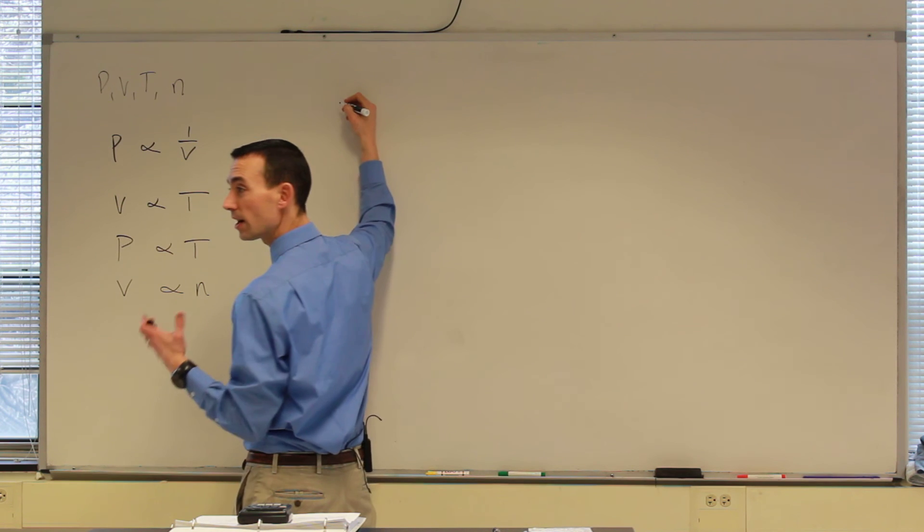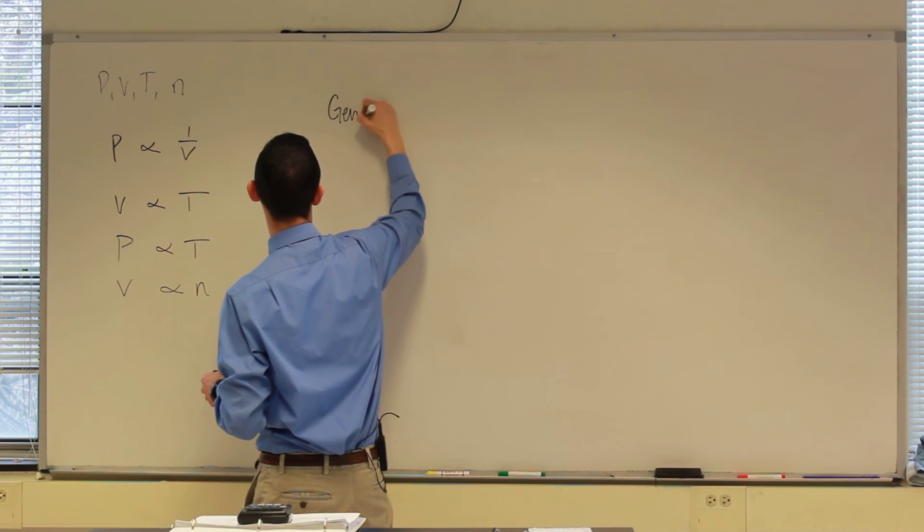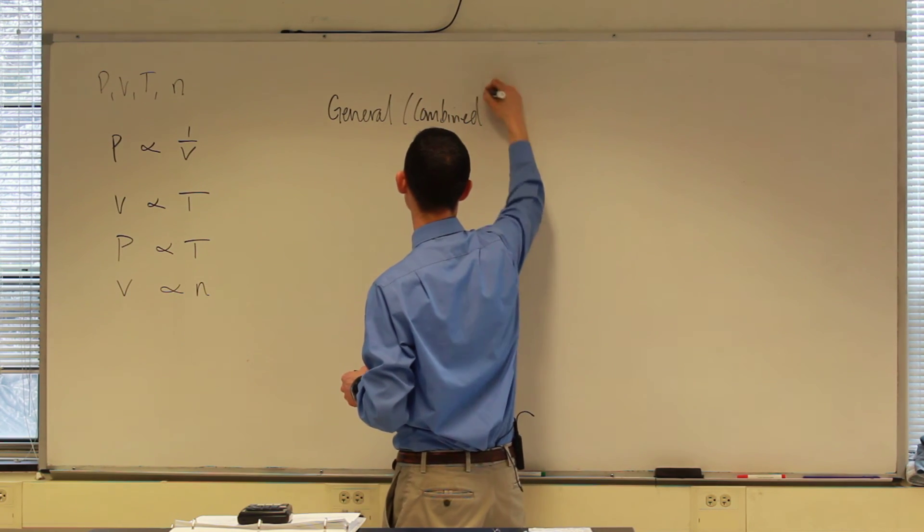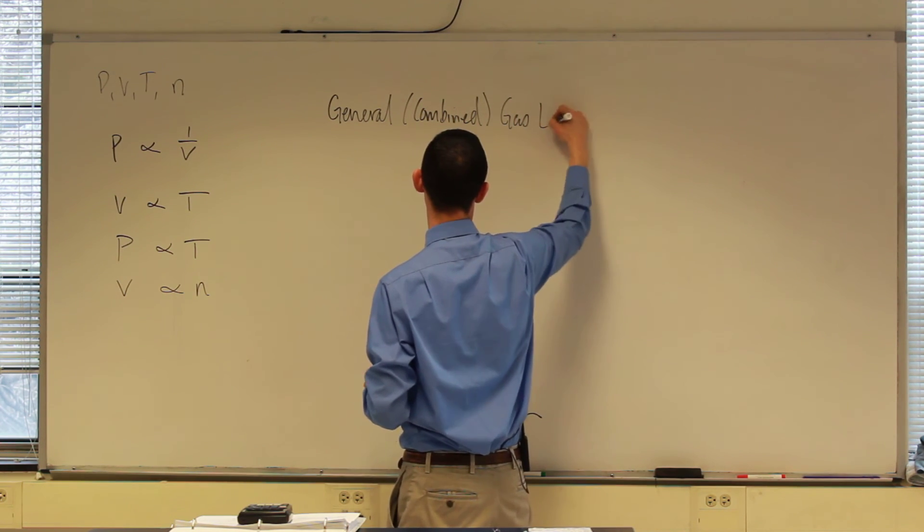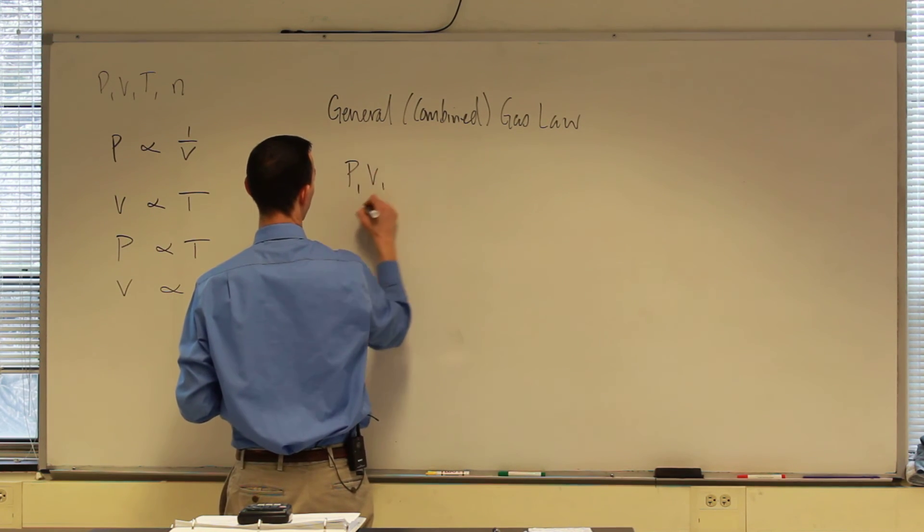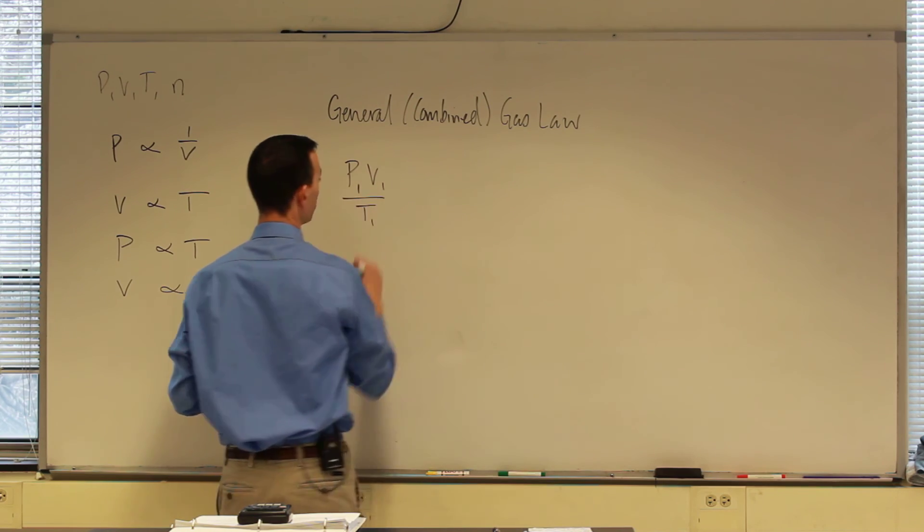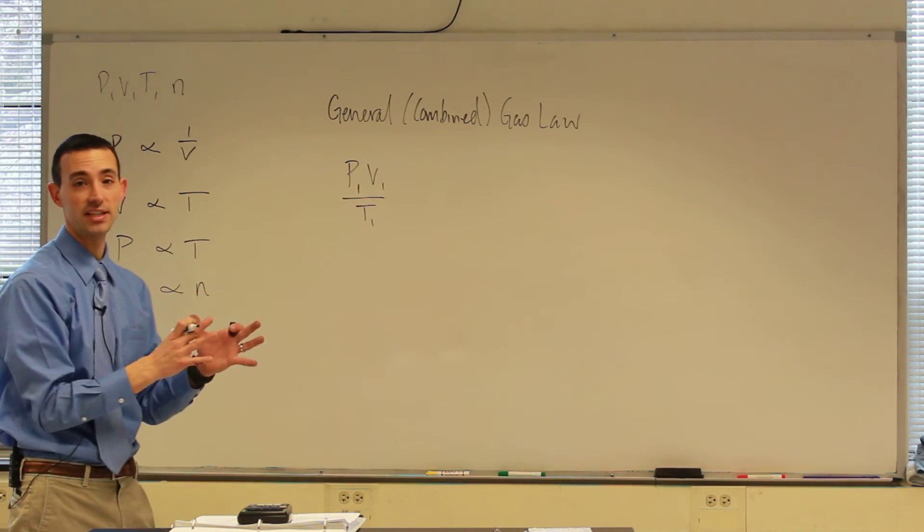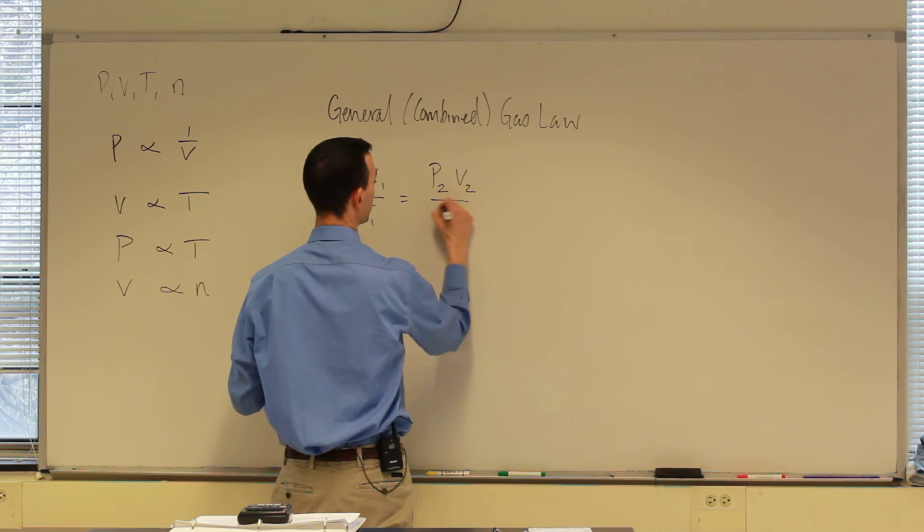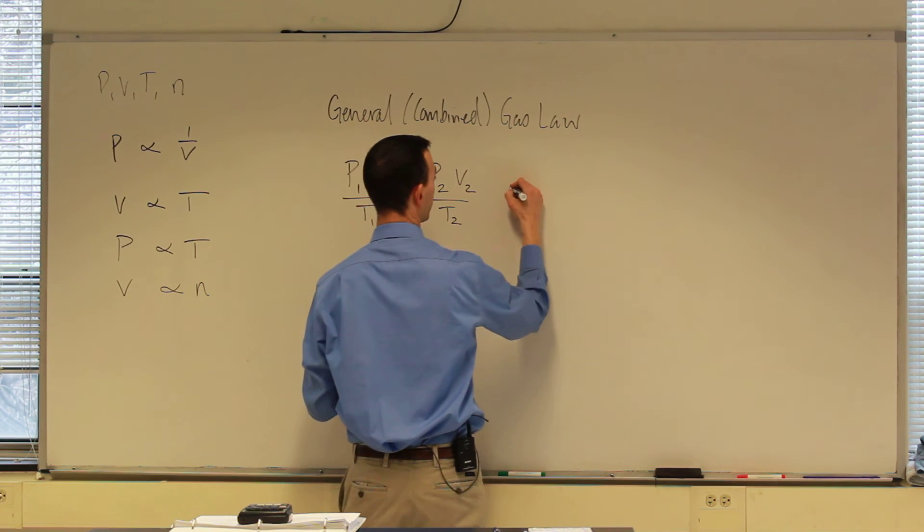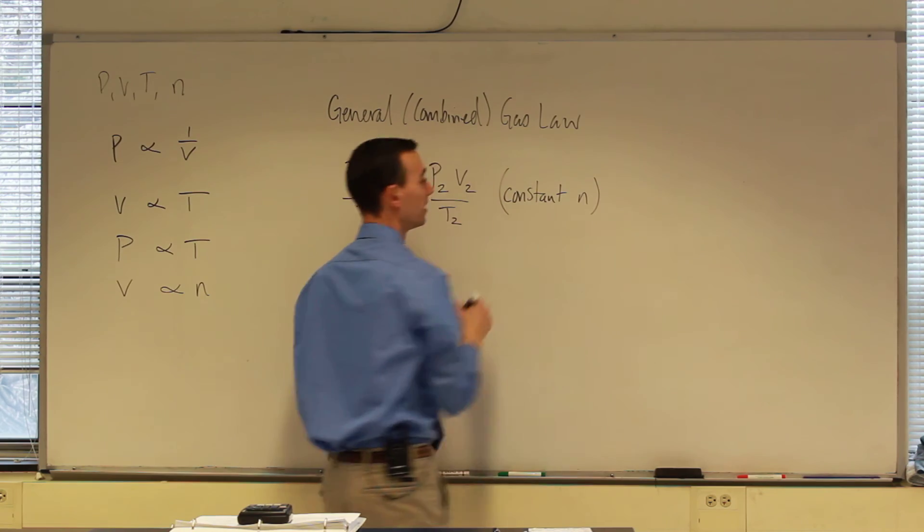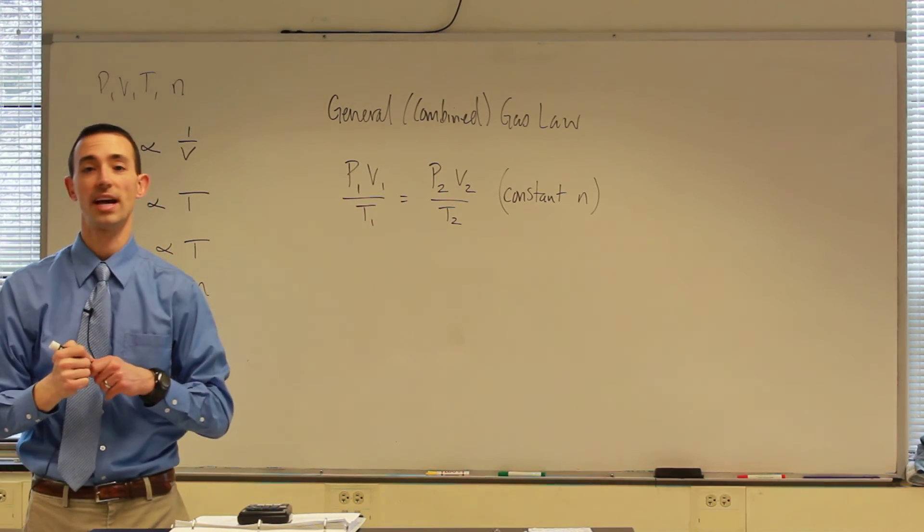And the two that I'll leave you with right now are what we now call the general, or I learned it as the combined, so sometimes we'll hear it as that, the general or combined gas law. Which says that the pressure of a gas times its volume divided by its temperature at one set of conditions is equal to the pressure times the volume divided by the temperature at a separate set of conditions. Now what's constant here is N, the amount. So the amount is constant.